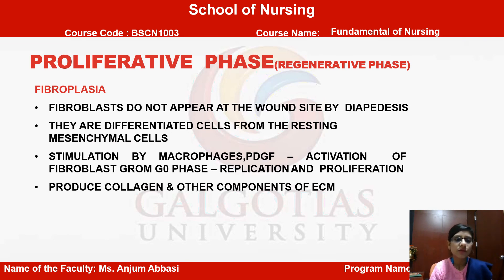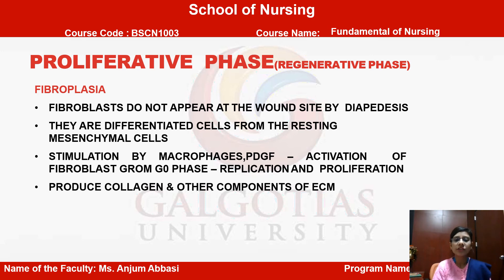Next is fibroplasia. Fibroblasts do not appear at the wound site by diapedesis — they are differentiated cells from resting mesenchymal cells, stimulated by macrophage-derived PDGF. Activation of fibroblasts from G0 phase leads to replication and proliferation, producing collagen and other ECM components.